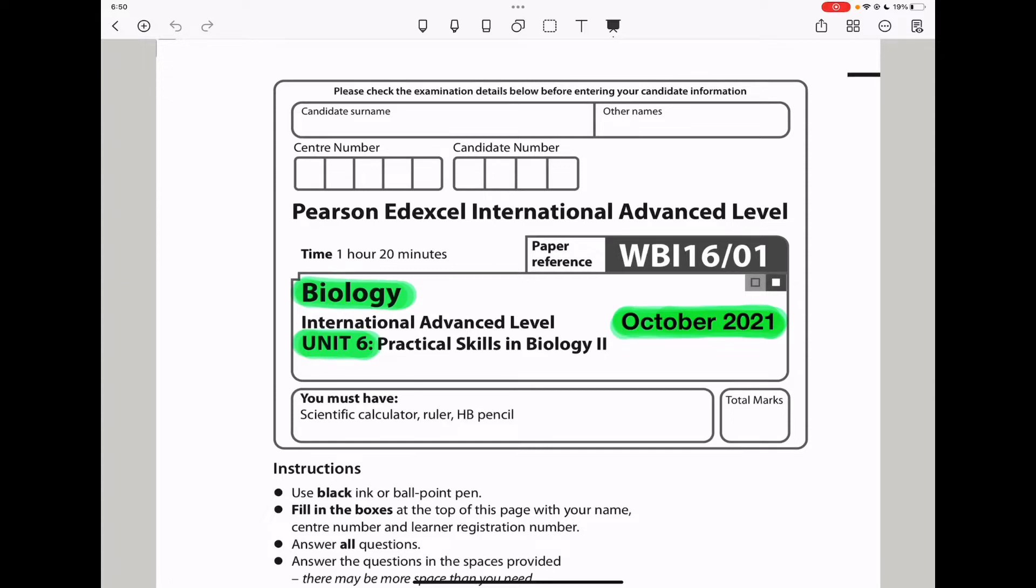Welcome to the Chemistry, Biology, and Math Revision Hub. Today we are doing the Pearson Edexcel International A-Level Biology Unit 6 for October 2021.